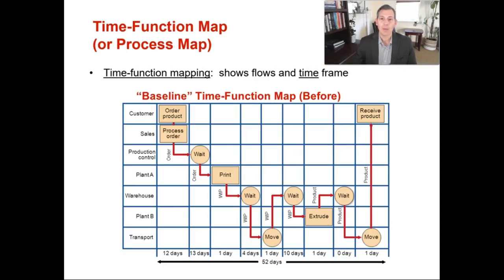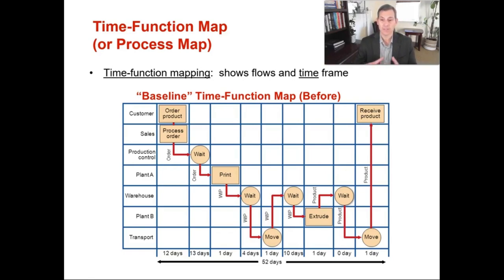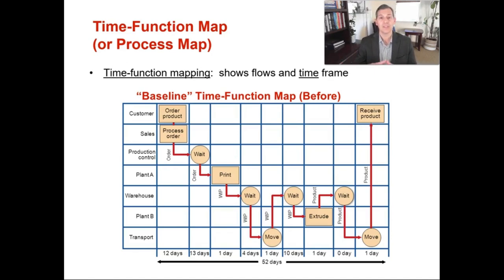A time function map or a process map shows the flows and the time frame for your process. In the example on the screen, this time function map is a 'before' picture of what a process was like before they made some improvements. You can see at the very bottom that this process took 52 days to complete. The time function mapping shows all the times for every single step, even if that step is just sitting and waiting. This is a great example for a Kaizen event, where you look at all the steps in the process, determine which ones are non-value-added versus value-added, and see which steps can be eliminated or improved in that journey of continuous process improvement.